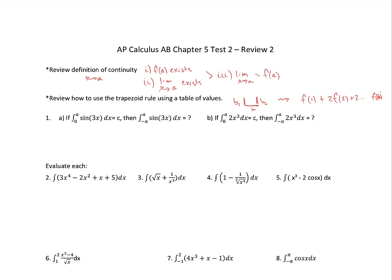Moving on to what we have covered in Chapter 5. This first problem: if the integral from 0 to a of sine of 3x dx equals c, then the integral from negative a to a of sine of 3x dx equals what? Well, sine is symmetric and in this case it's compressed horizontally because of that 3 — we're changing the period. Notice the area up here negates the area down here. So instead of having to integrate and solve this, you can realize this is an odd function, and the integral from negative a to a will be 0.